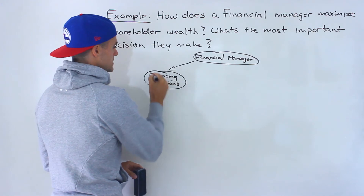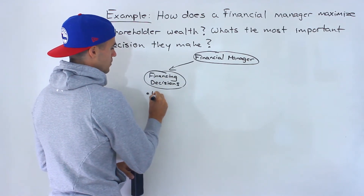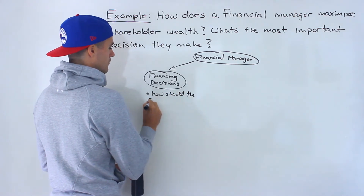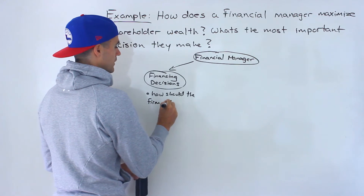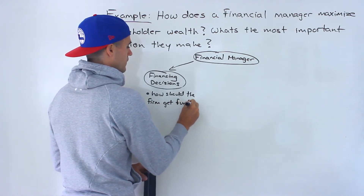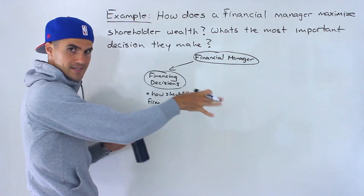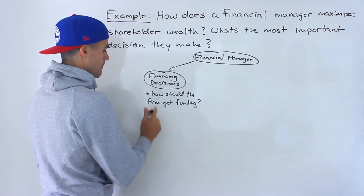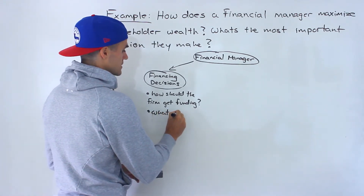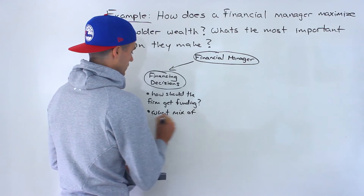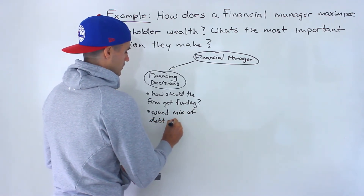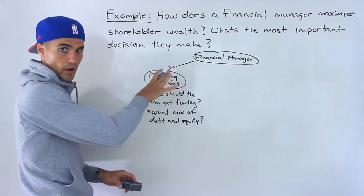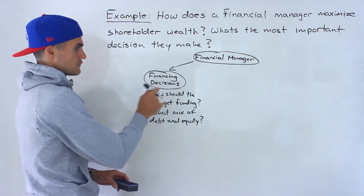Financing decisions refer to how should the firm get funding. Basically, how is that right side of the balance sheet going to look? What mix of debt and equity should the firm undertake? So that's the first kind of decision.